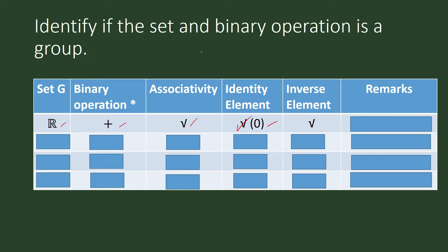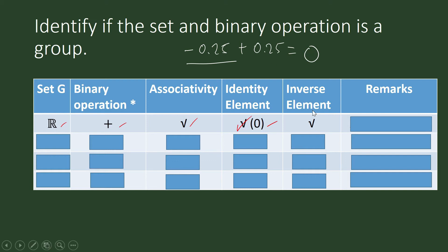For example, take the real number negative 0.25. What must you add to negative 0.25 to obtain the identity element? That is our definition of the inverse: an element plus its inverse equals the identity element. The inverse is 0.25, and this is true for all elements in the set of real numbers. Therefore, the set of real numbers under the operation of addition is a group.